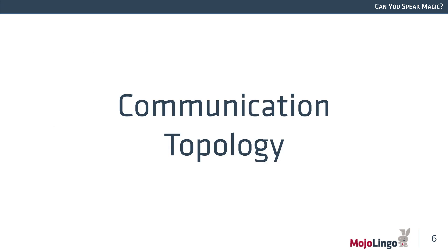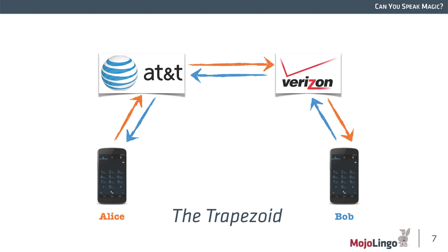I want to talk for a minute about communication topology — the structures by which we set up calls. This is what I think most of us are familiar with: the so-called trapezoid. In the trapezoid you have Alice and Bob who want to talk to each other. Alice happens to be an AT&T subscriber and Bob's a Verizon subscriber, and they can still talk to each other because Verizon and AT&T federate. They share the same address space — telephone numbers — and they know not to give out the same phone number to two different people. That's a standard SIP deployment where your carrier upstream routes calls out to whoever you're going to reach.